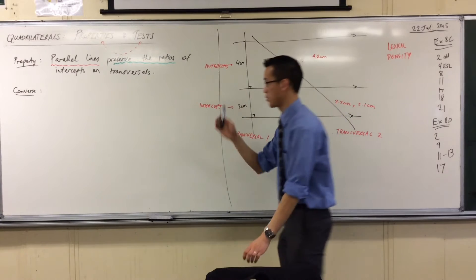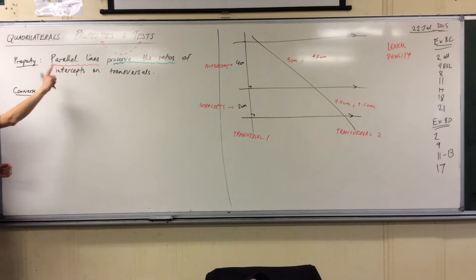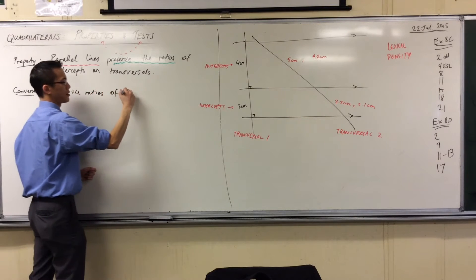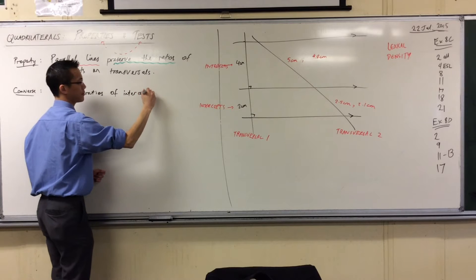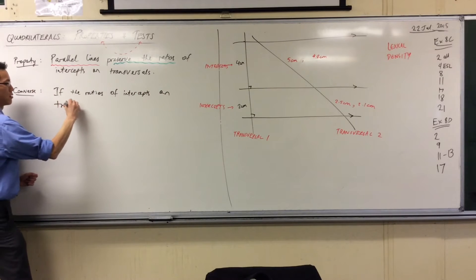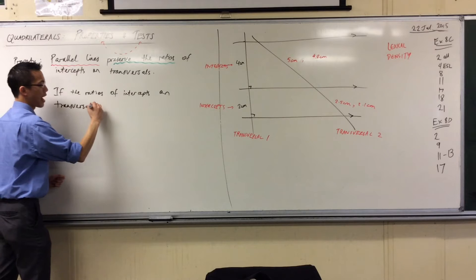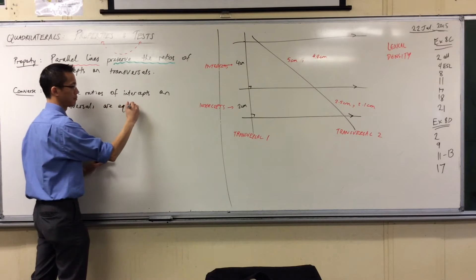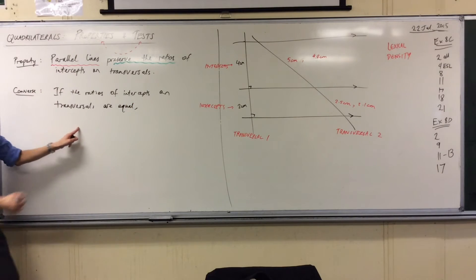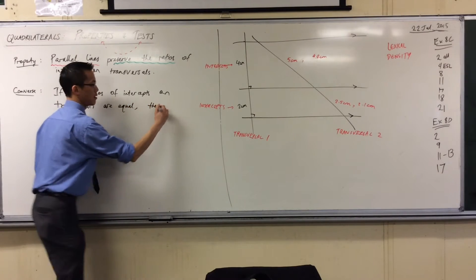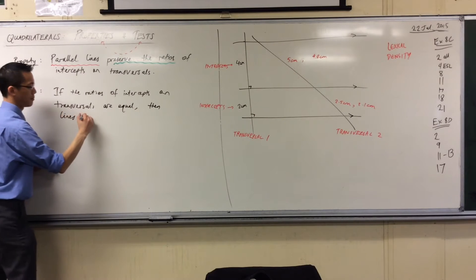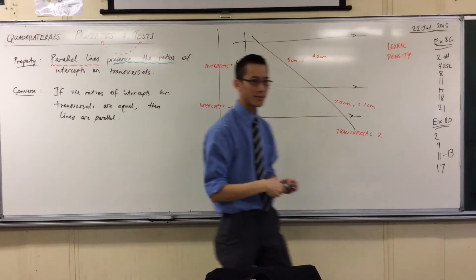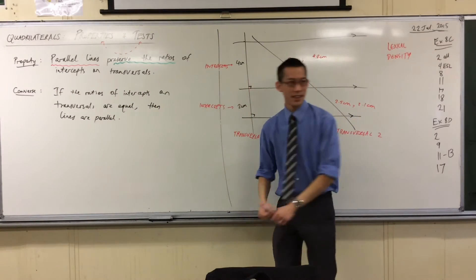So here comes the converse. If the ratios of intercepts on transversals are equal, then the lines are parallel. And those lines are the ones that form the transversals. You used 'transversals' as a verb there — you were kind of missing an important phrase in that sentence.